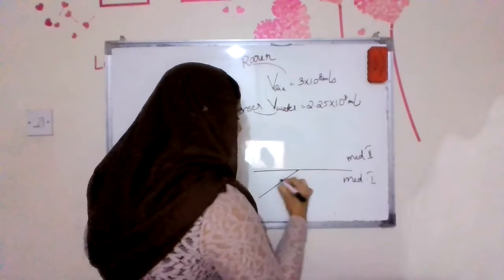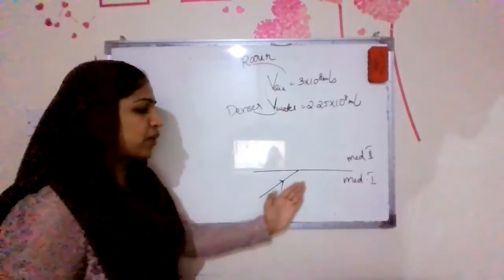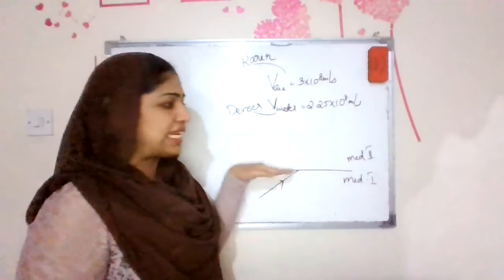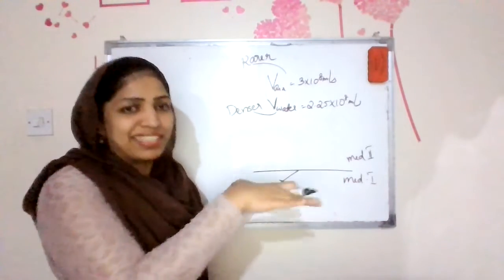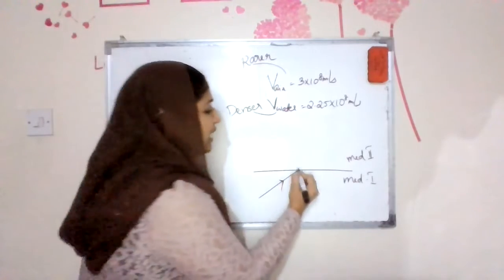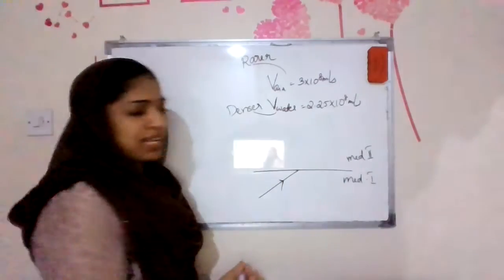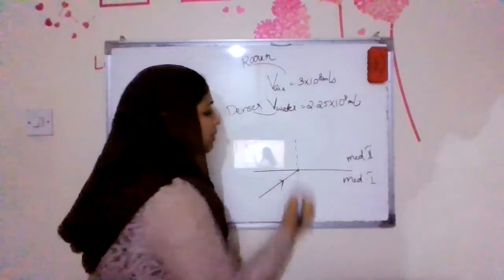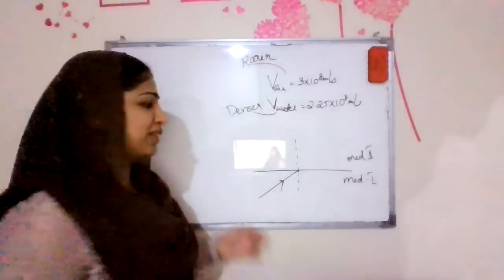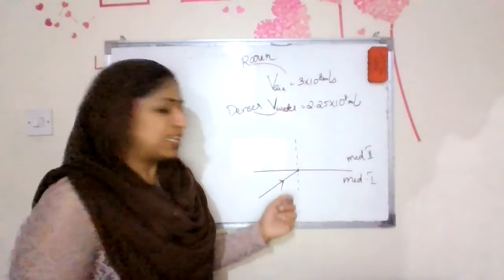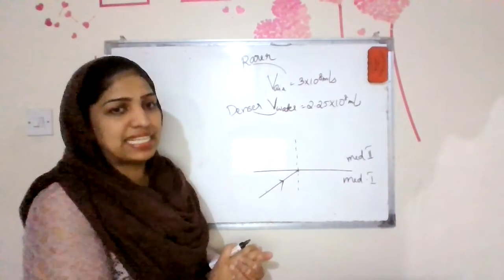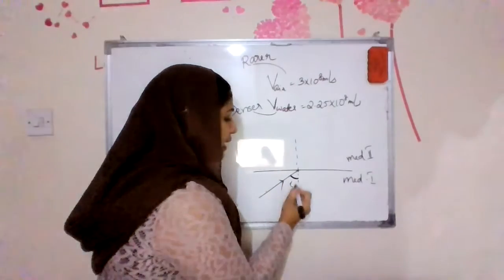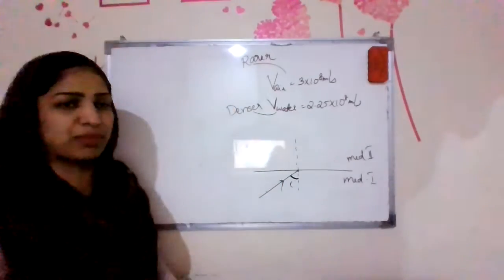Suppose this is medium one and this is medium two. This is the incident ray hitting a point of incidence. At this point of incidence, we have a perpendicular line called the normal. The angle between the incident ray and the normal is called the angle of incidence.